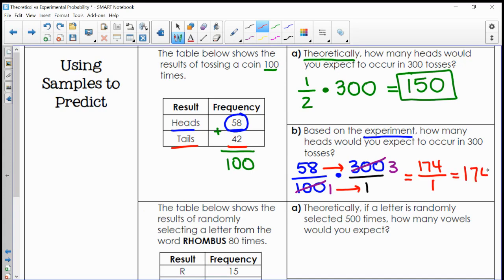So based on this experiment, I would expect to toss a head about 174 times. Notice again here how my experimental and theoretical probability are different from each other.